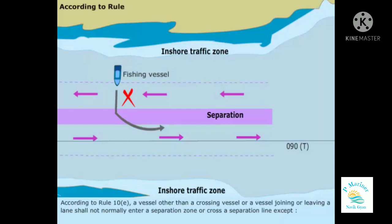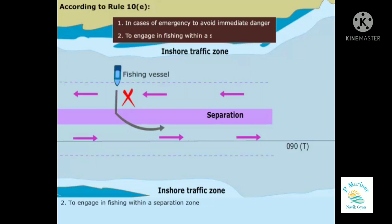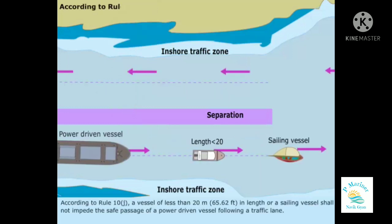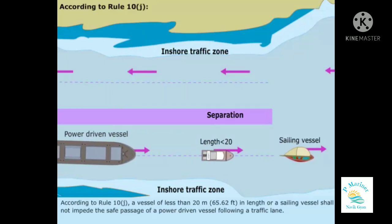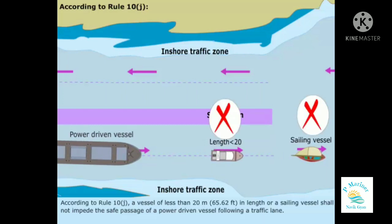According to Rule 10e, a vessel other than a crossing vessel or a vessel joining or leaving a lane shall not normally enter a separation zone or cross a separation line except: 1. In cases of emergency, to avoid immediate danger. 2. To engage in fishing within a separation zone. According to Rule 10j, a vessel of less than 20 meters or 65.62 feet in length, or a sailing vessel, shall not impede the safe passage of a power-driven vessel following a traffic lane.